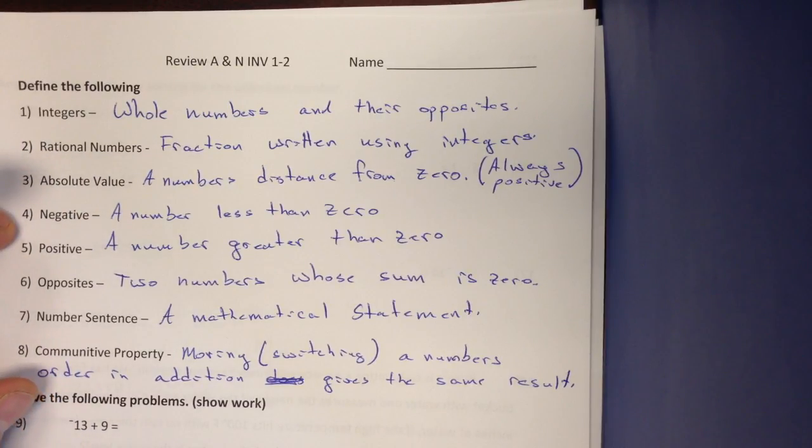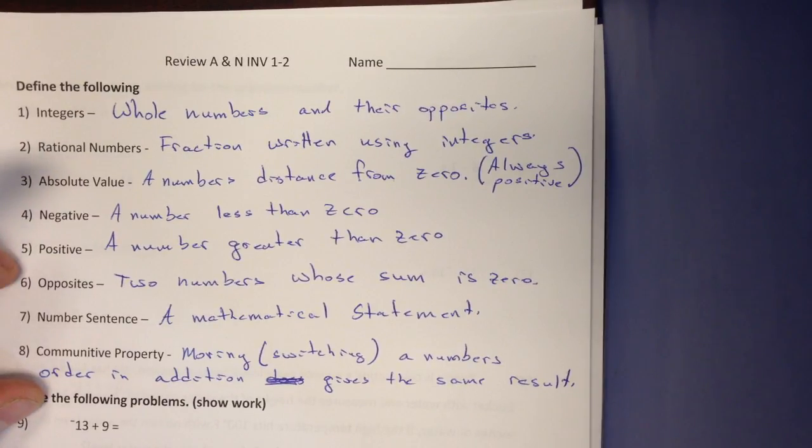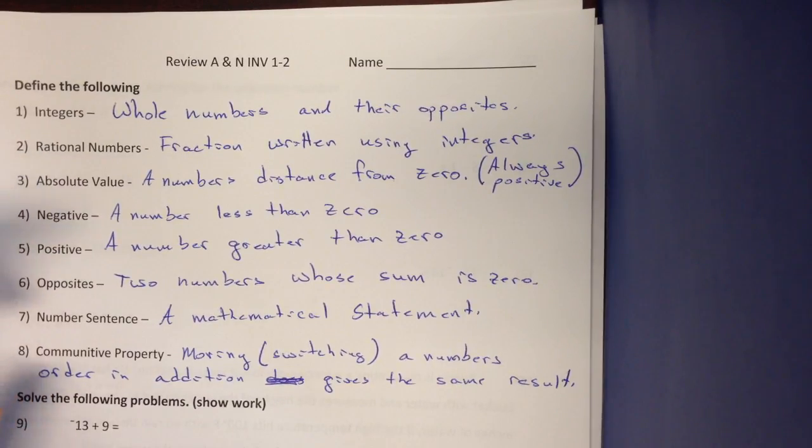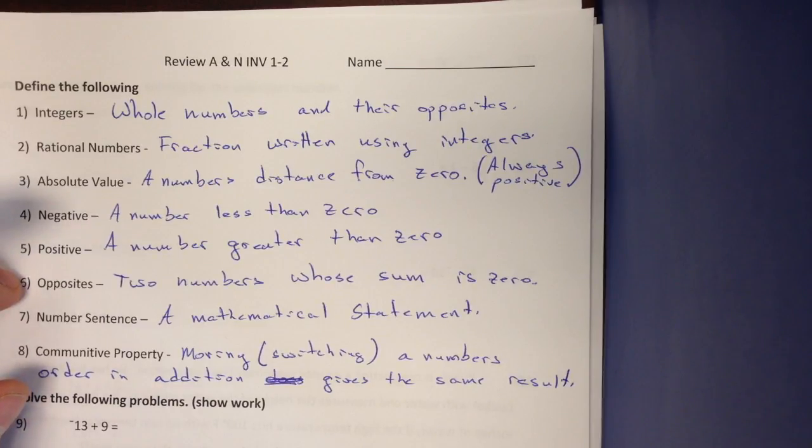A negative number is less than 0. A positive number is greater than 0. Opposite numbers, two numbers whose sum is 0. A number sentence is a mathematical statement.